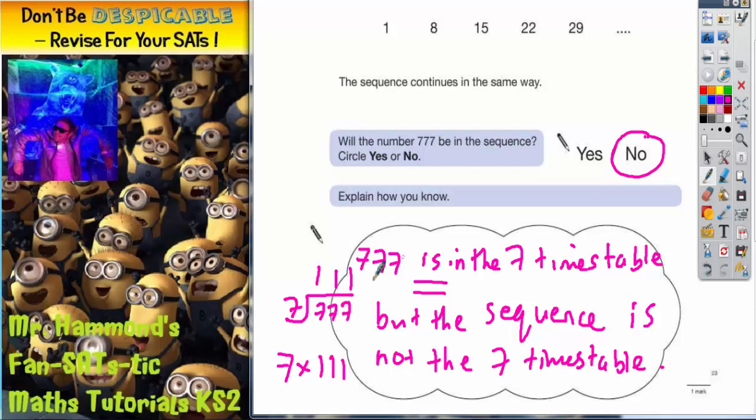Okay, so 777 is in the 7 times table, and we've proved that here. Well, the sequence is not the 7 times table.